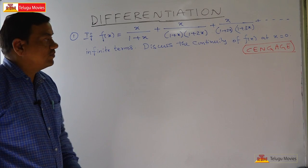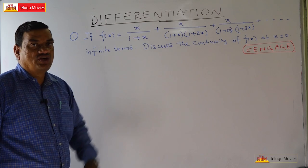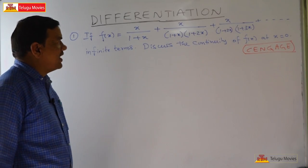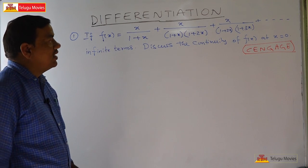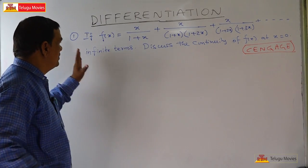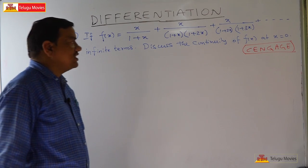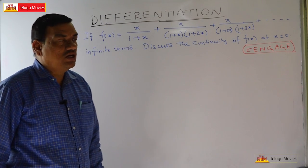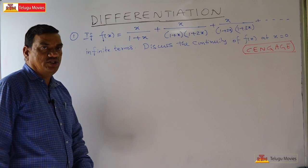The first problem: the function f(x) is equal to x/(1+x) plus x/((1+x)(1+2x)) plus x/((1+2x)(1+3x)), and so on for an infinite number of terms. We have to discuss the continuity of this function at x=0.